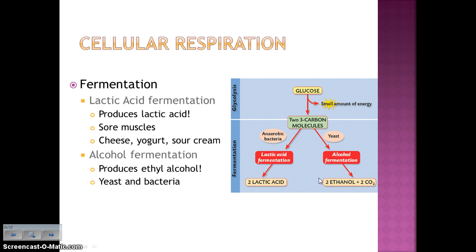There are two types of fermentation. Lactic acid fermentation produces lactic acid — if you've ever worked out and your muscles have gotten sore and started to burn, that means you've depleted the oxygen in your muscles, so fermentation is taking place and producing lactic acid, which causes that burning feeling. Lactic acid is also used in making foods like cheese, yogurt, and sour cream. Alcohol fermentation is mostly done by yeast, and some bacteria, producing ethanol or ethyl alcohol.